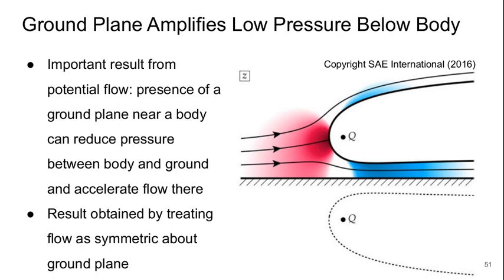The first of these important results is the impact of a ground plane. This is obviously relevant for cars since cars tend to travel close to the ground. When we have a ground plane, it amplifies the low pressure below a body. We can get this important result from potential flow theory. The presence of a ground plane near an object can reduce the pressure between the body and the ground compared to if the ground wasn't there and thus accelerate that flow. So the colors here indicate magnitude of pressure. Darker red is getting towards higher pressure, and blue or darker blue is getting towards very low pressures. White is kind of nominal free stream pressure.